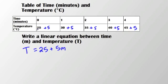You'll notice over here for 0, my time in minutes is 0. So when I substitute 0 for my minutes here, I will get 25 plus 5 times 0, which is 0. So it just stays at 25.